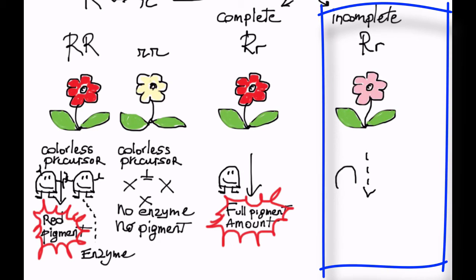In the case of incomplete dominance, enzyme dosage is limited. The reduced amount made from a single allele slows down synthesis and decreases the amount of pigment that is produced, resulting in reduced color intensity.